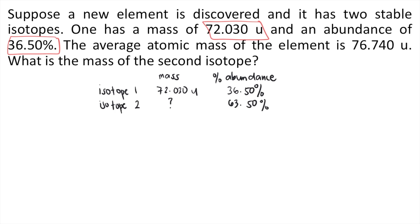Now we can solve for their decimal abundance. To get the abundance, divide the percent abundance by 100. For isotope 1, 36.50 divided by 100 is 0.365. For isotope 2, 63.50 divided by 100 is 0.635.